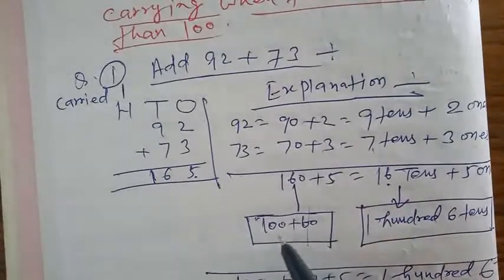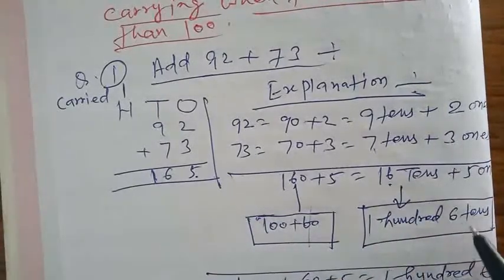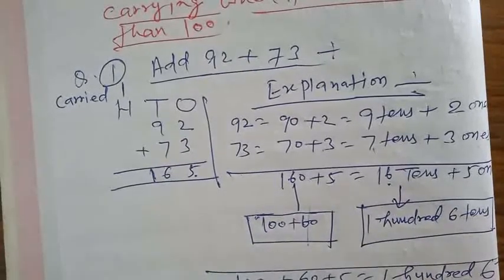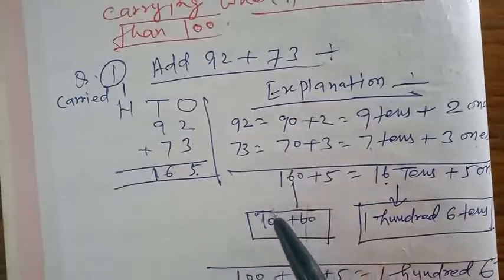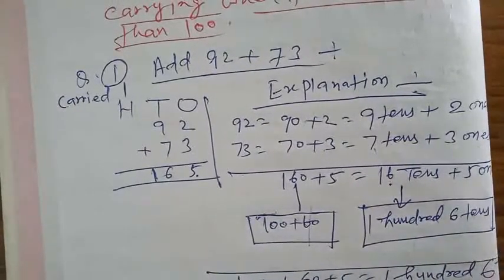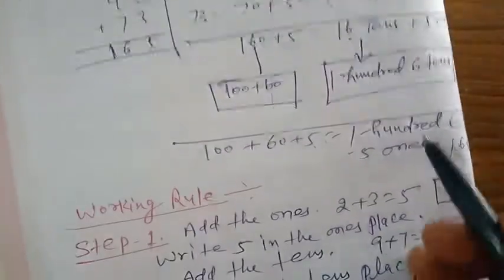100 plus 60 is 160. Now add all together: 100 plus 60 plus 5 equals 165. So the result will be 165.